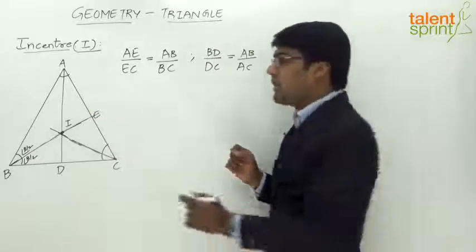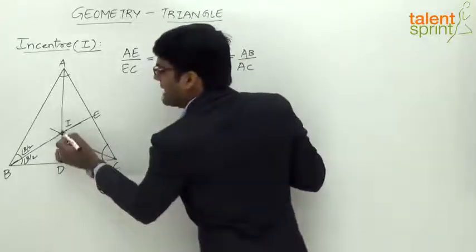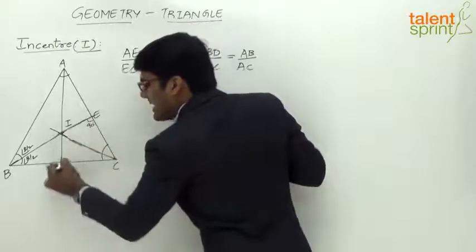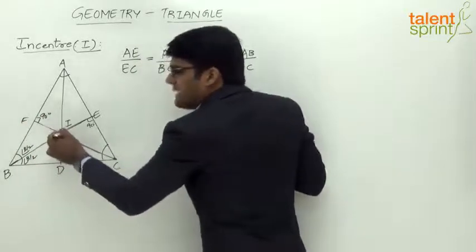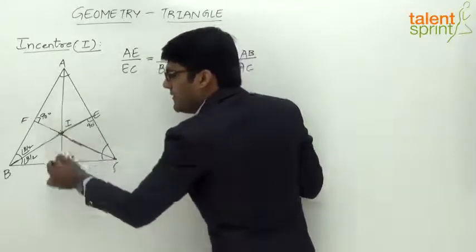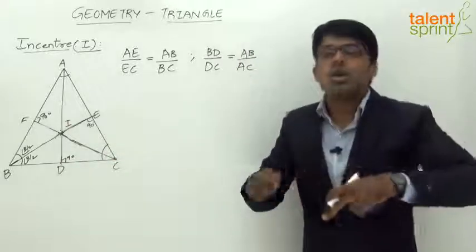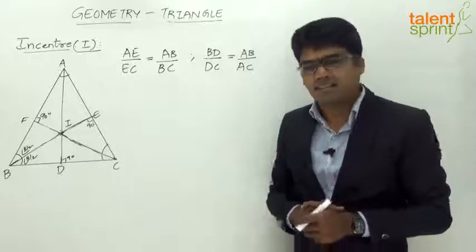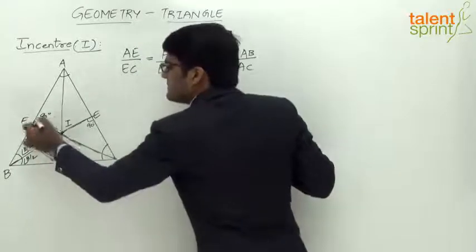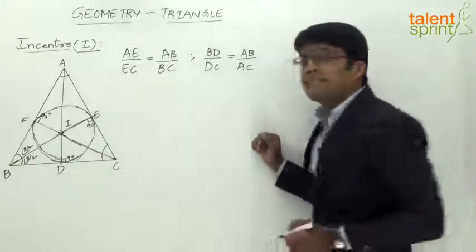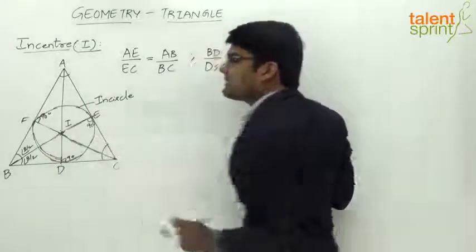The incenter I is equidistant from all three sides of the triangle. If we draw a perpendicular from the incenter to each of the three sides, the perpendicular lengths are all equal — IF equals IE equals ID. Using this equal distance as the radius, we can draw a circle that touches all three sides internally, which is known as the incircle. The radius of this incircle is called the inradius, denoted by the small letter r.